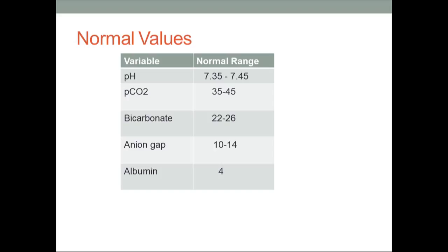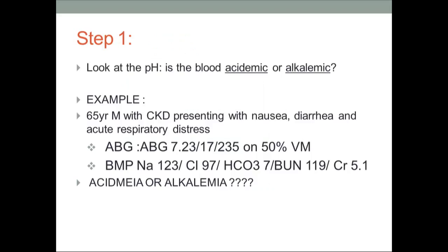Starting with the normal values: pH is in the range of 7.35 to 7.45, PaCO2 (partial pressure of carbon dioxide) is 35 to 45, bicarbonate is 22 to 26, and anion gap is 10 to 14. Normal albumin we will take as 4. In any blood gas analysis, you look at the pH first.